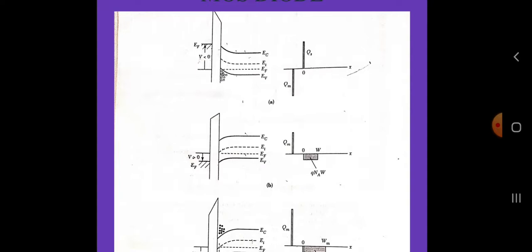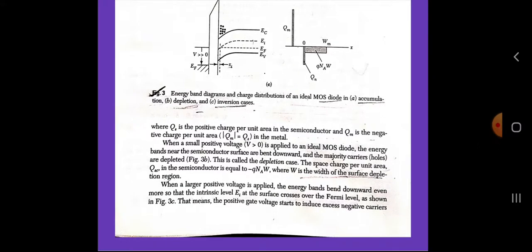Once strong inversion occurs, the surface depletion layer width reaches a maximum. This is because when the bands are bent downward far enough for strong inversion to occur, even a very small increase in band bending corresponding to a very small increase in depletion layer width results in a large increase in the charge Qn in the inversion layer. Thus, under a strong inversion condition, the charge per unit area Qs in the semiconductor is the sum of the charge Qn in the inversion layer and charge Qsc in the depletion region: Qs equals Qn plus Qsc equals Qn minus qNaWm, where Wm is the maximum width of the surface depletion region.